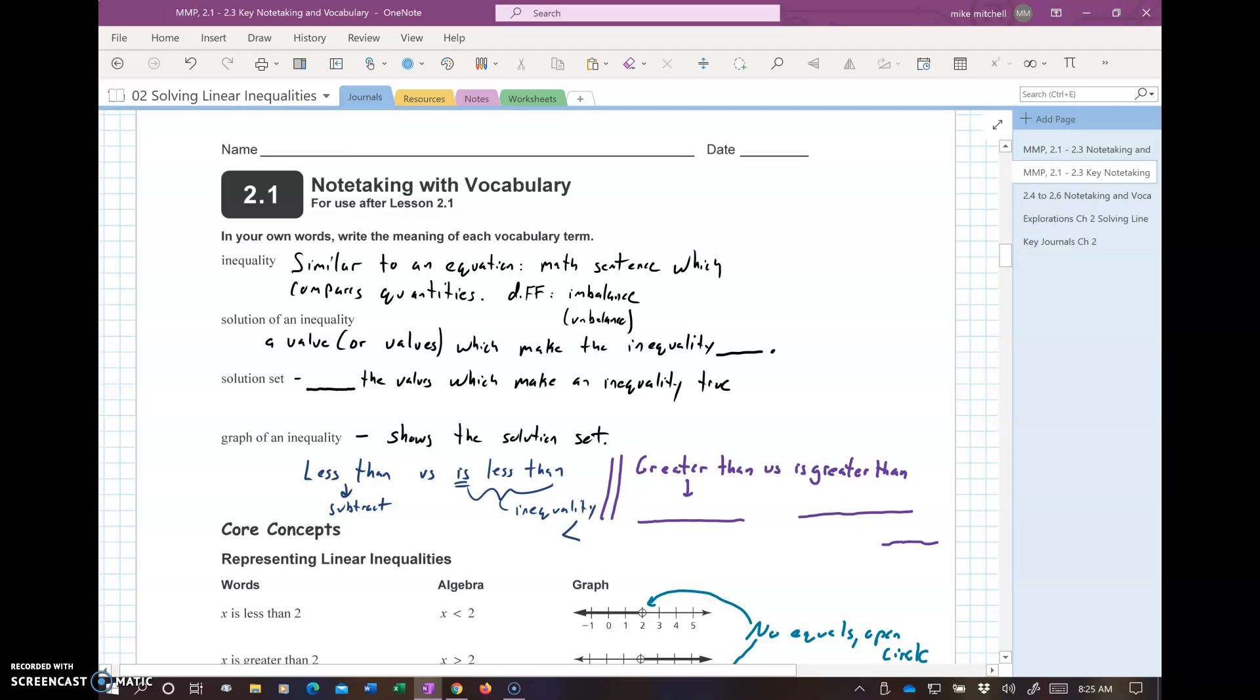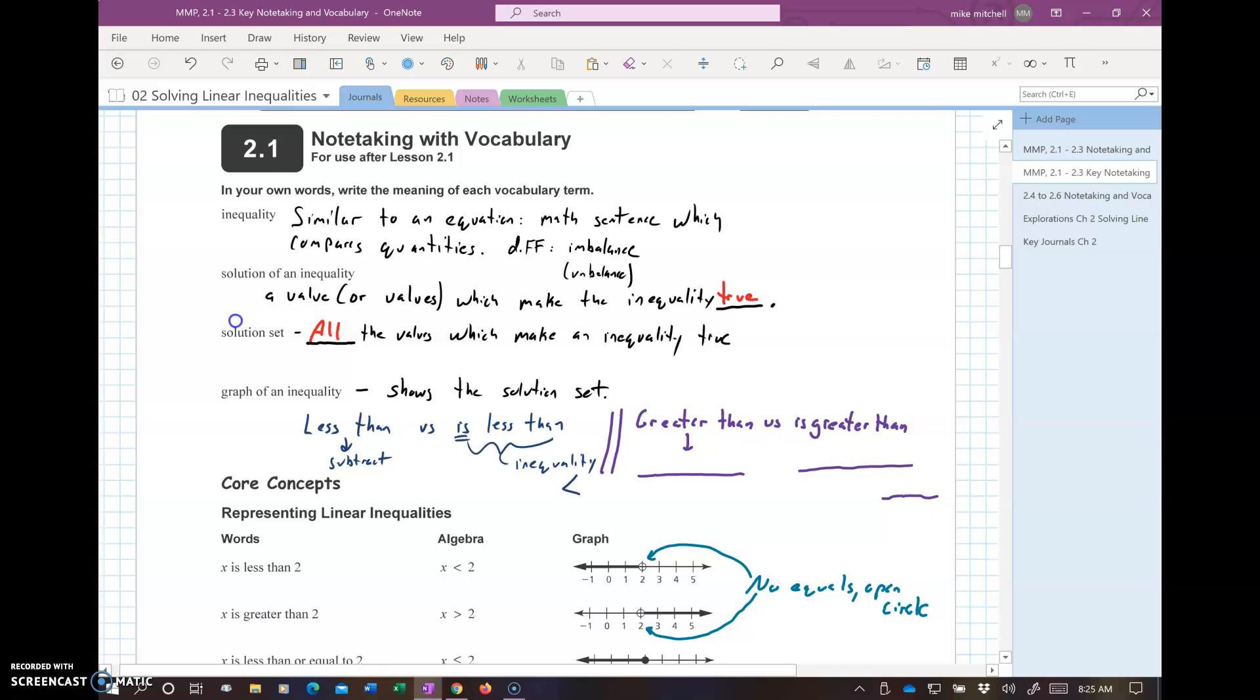Solution of inequality: the value or values which make the inequality true. Solution set: this is all the values which make the inequality true. I should mention, try to complete these before you see me put them down. No problem making mistakes. You want to identify those.